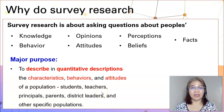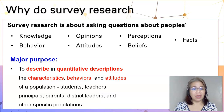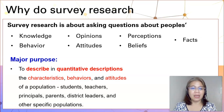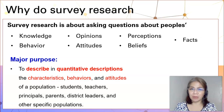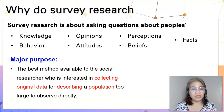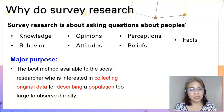To recap, we have learned in our previous video that doing survey research is basically asking people about their knowledge, behavior, opinions, attitudes, perceptions, and beliefs, and even discovering facts. Because the primary purpose of a survey research is to describe in quantitative descriptions the characteristics, behaviors, and attitudes of a population. We have also learned that survey research is the best method available to the social researcher who is interested in collecting original data for describing a population that is too large to observe directly.